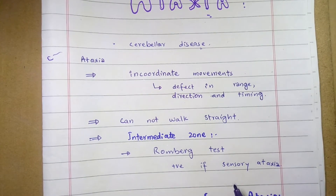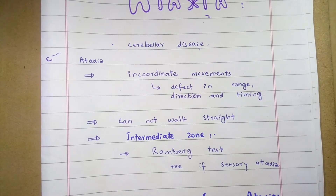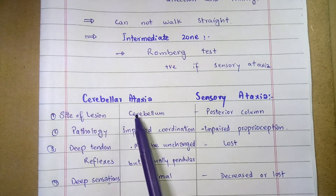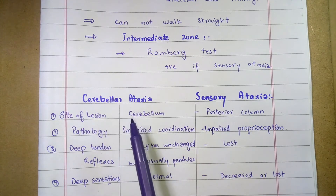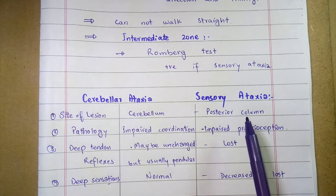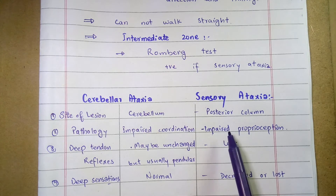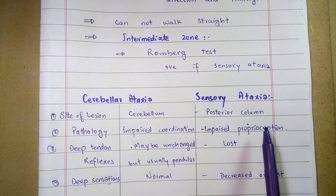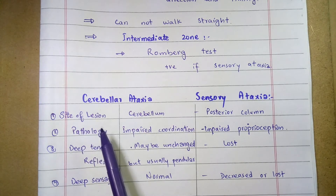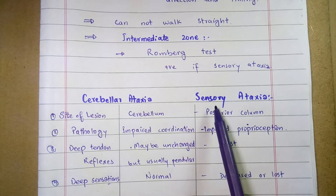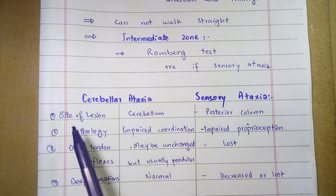Now let's look at the differences between sensory ataxia and cerebellar ataxia. Cerebellar ataxia is due to damage of the cerebellum, while sensory ataxia is due to damage of the dorsal column pathway, posterior column, or peripheral nerves. The site of lesion in cerebellar ataxia is the cerebellum, while for sensory ataxia it is the posterior or dorsal column pathway.